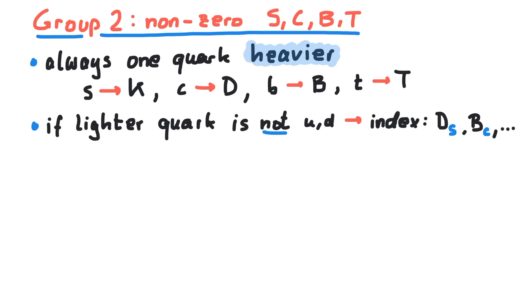And since we chose the convention that the sign of the flavor quantum number is the same as the sign of the electric charge, we can immediately deduce the quark structure. For instance, the D-plus contains a charm as the heavier quark. Since there is no index, the lighter quark must be up or down.